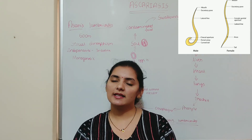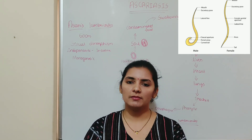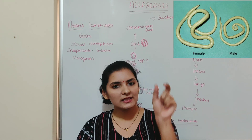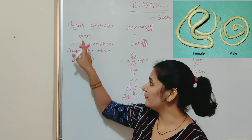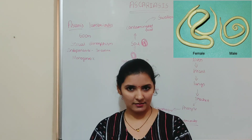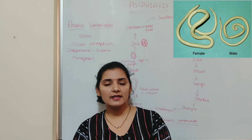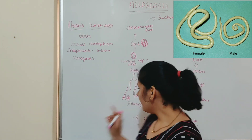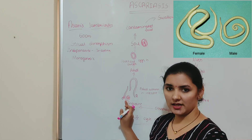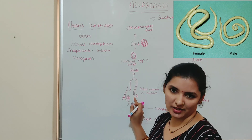Roundworm has been living since many years, from time immemorial. It is cosmopolitan in distribution, meaning it is present worldwide. It is a macroscopic pale white long slender tube-like worm which measures up to 50 centimeters. Ascaris lumbricoides shows sexual dimorphism — sexes are separate and male and female can be easily distinguished externally. Males are smaller in size compared to females, with a pointed curved posterior end, whereas females are longer with a blunt straight posterior end.